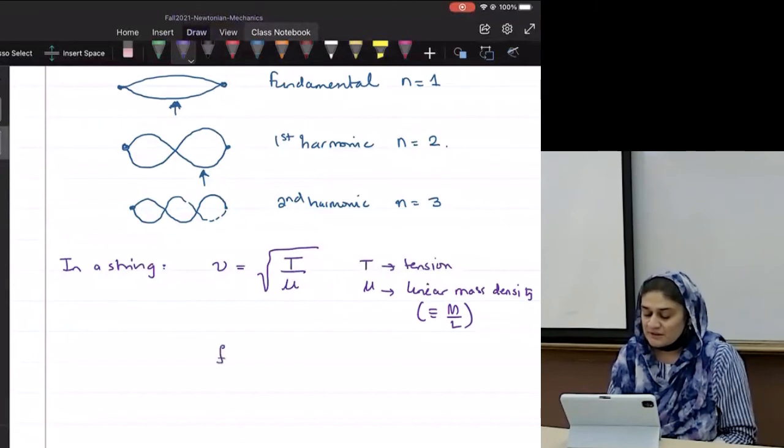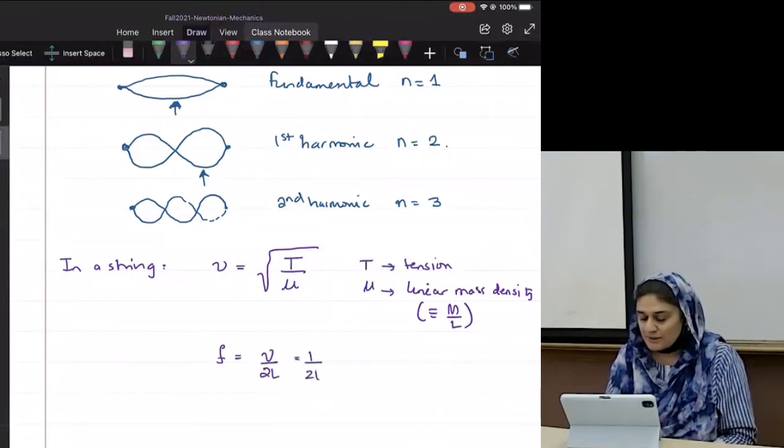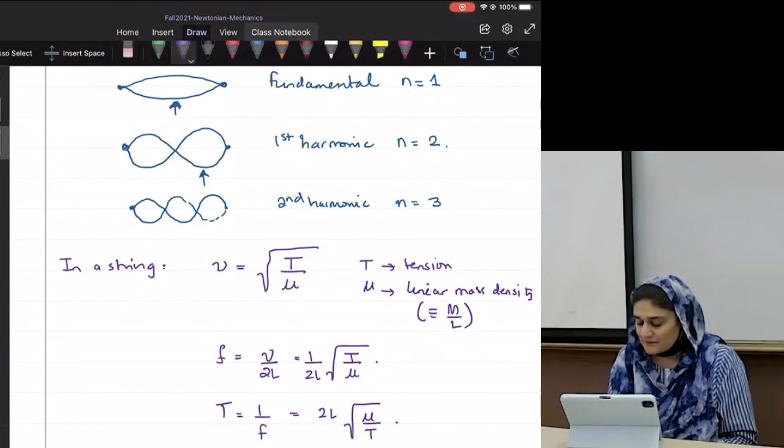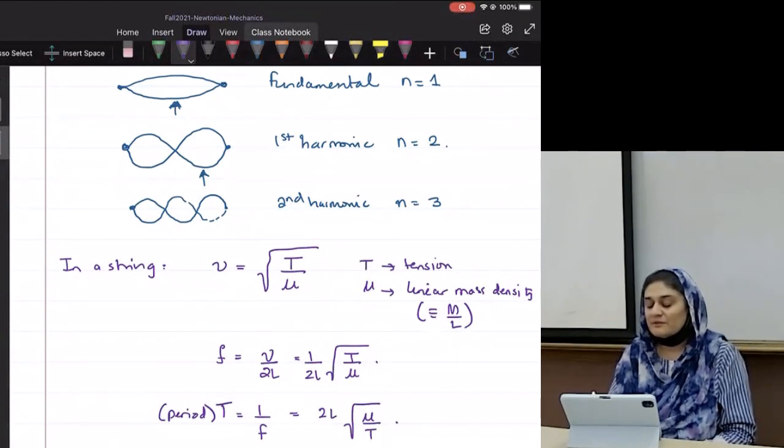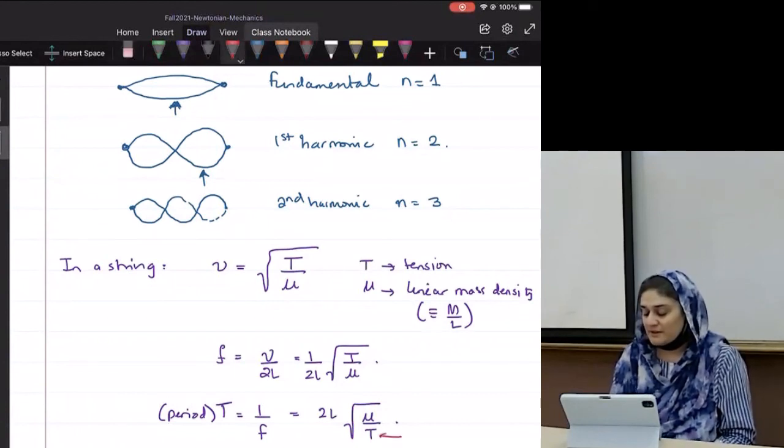Frequency in a string is given by speed over 2L or 1 over 2L square root of T over mu. T equals 1 over F, where T, this T is the period. Sorry, this T equals 1 over F equals 2 pi square root of mu over T, where this T is the tension. Please be very careful. This is tension.